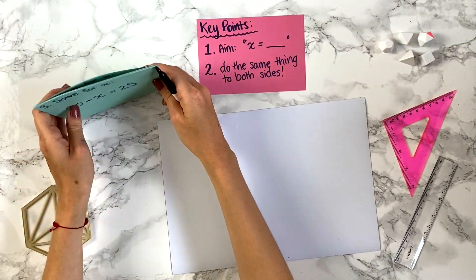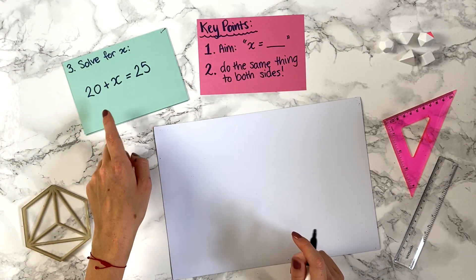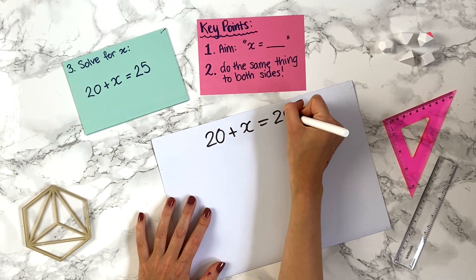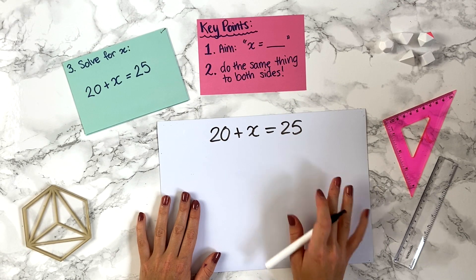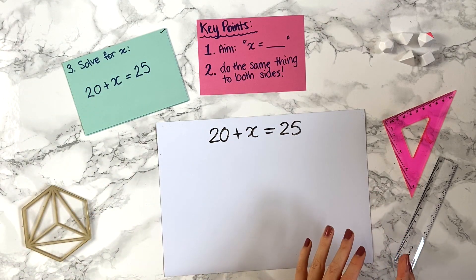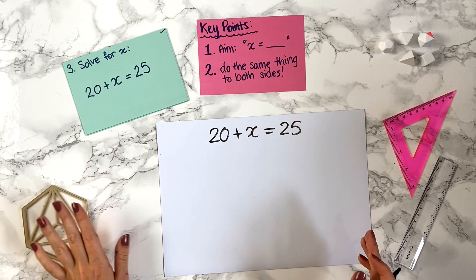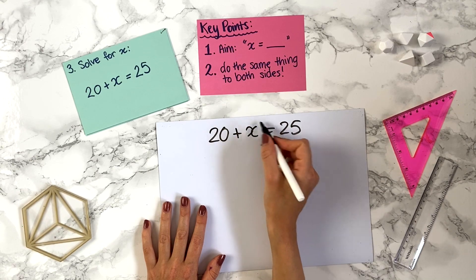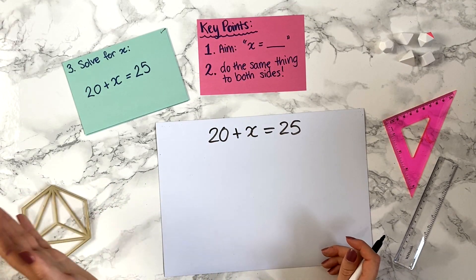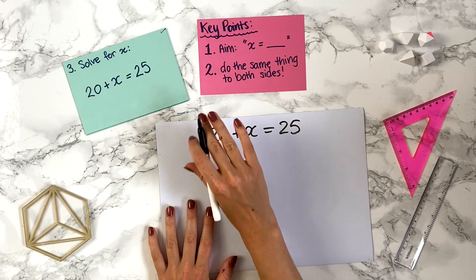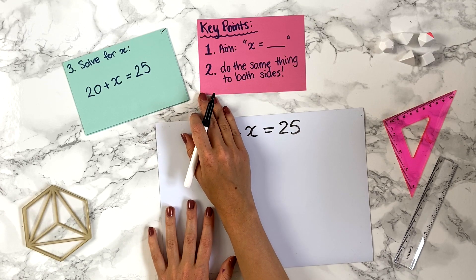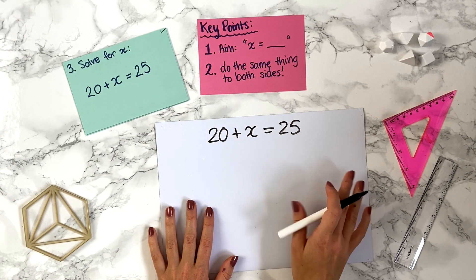Question three: solve for x, 20 plus x equals 25. Our aim is to get x equals something — all numbers on one side, x on the other. The x is on the left-hand side, so let's keep it there and move all numbers to the right. We need to get rid of that 20, so we minus 20 from that side.